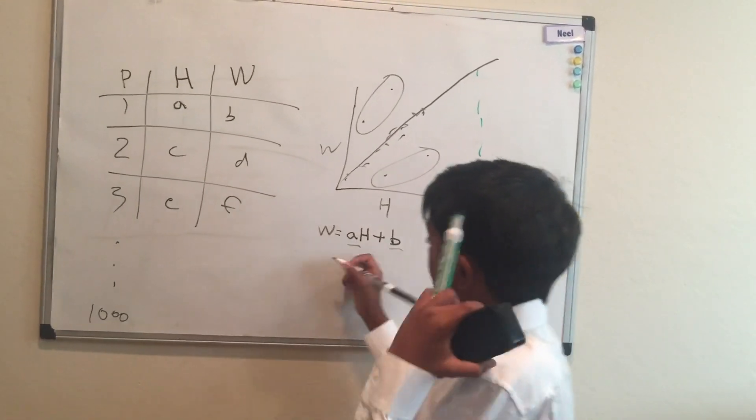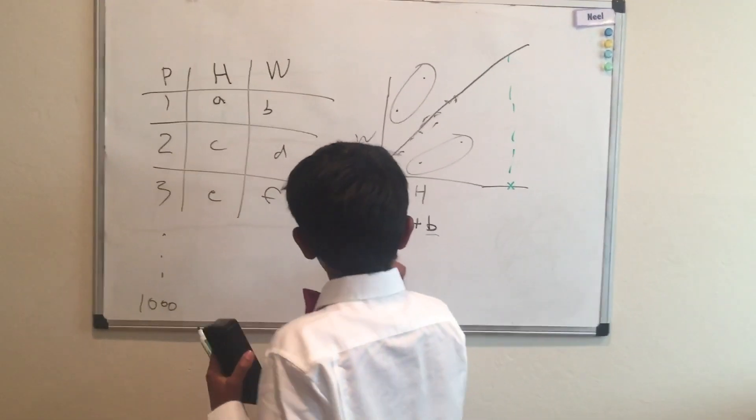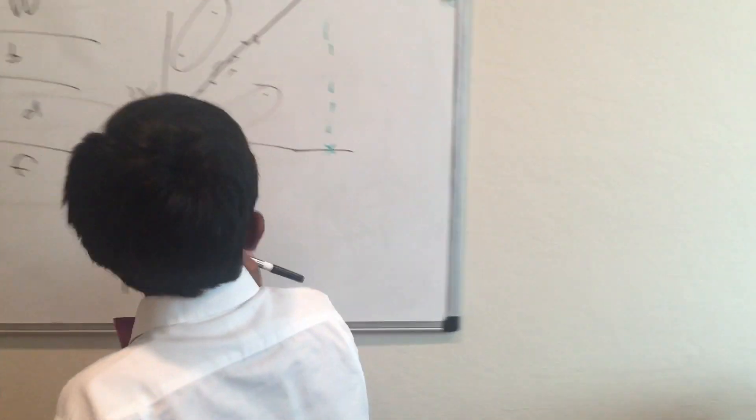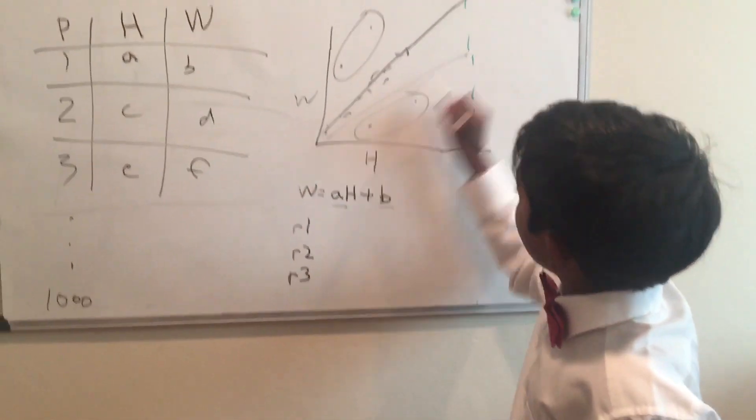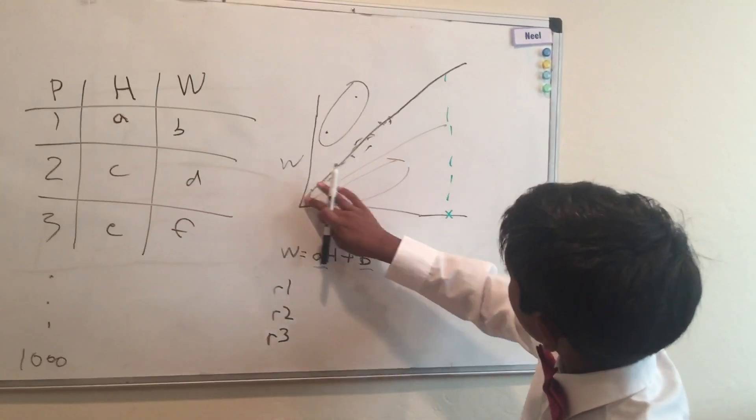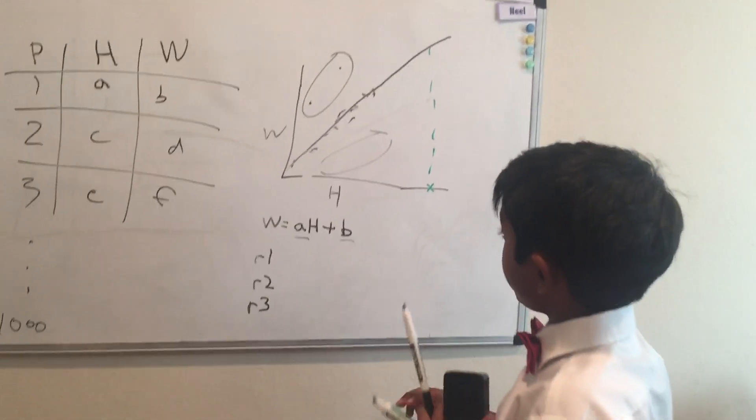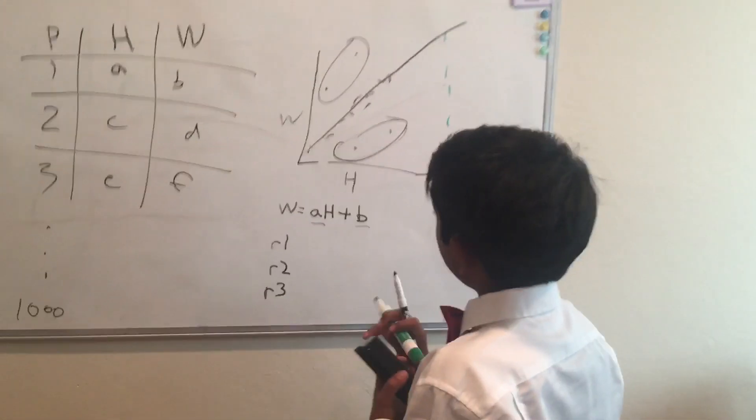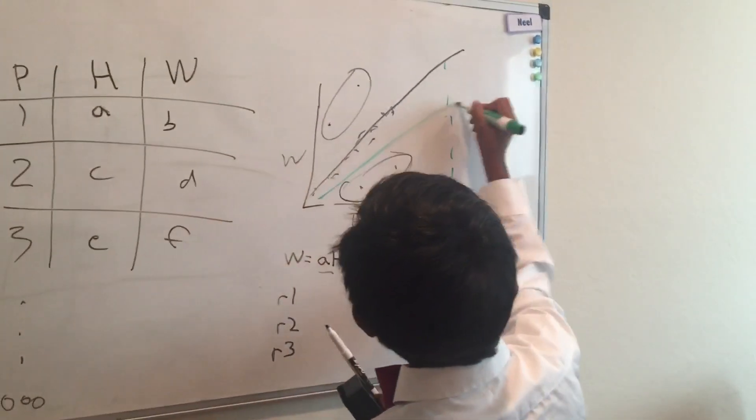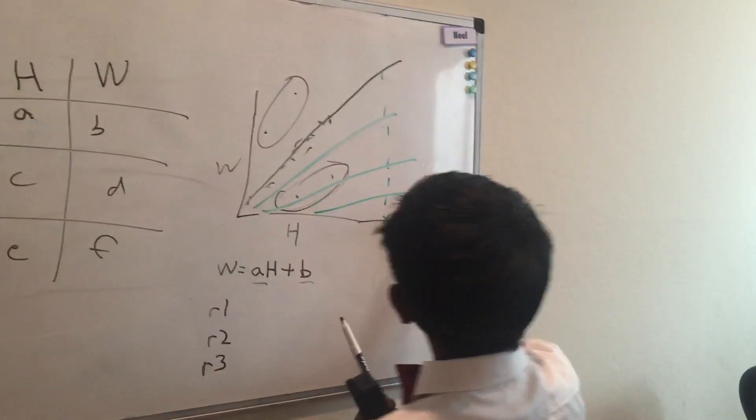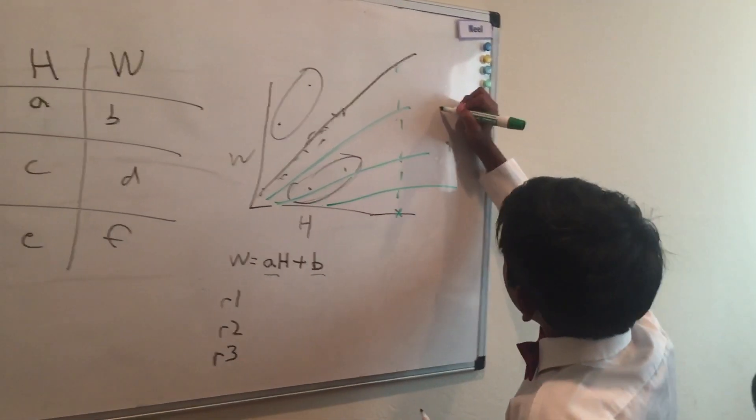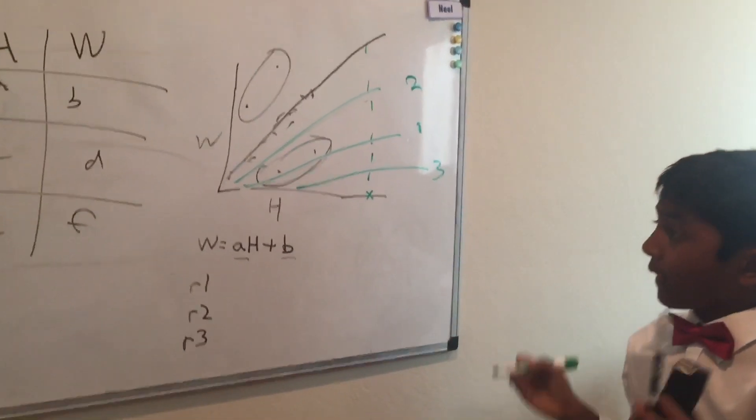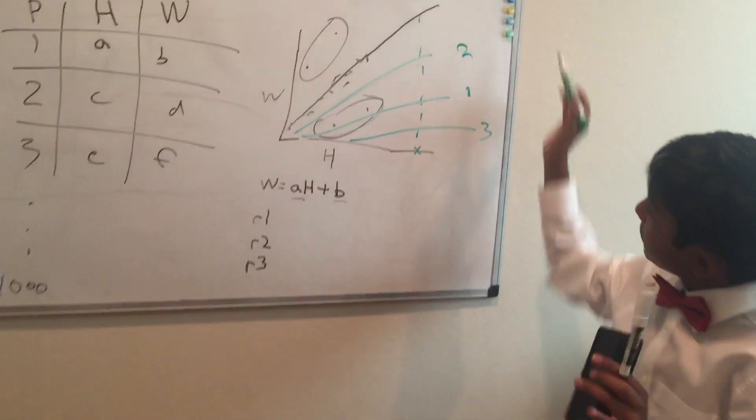If you just do random experiments, random experiment one, random experiment two, and random experiment three, then let's say you get these lines over here. These are the lines you generate, and there's second, third. Which line is the best here?